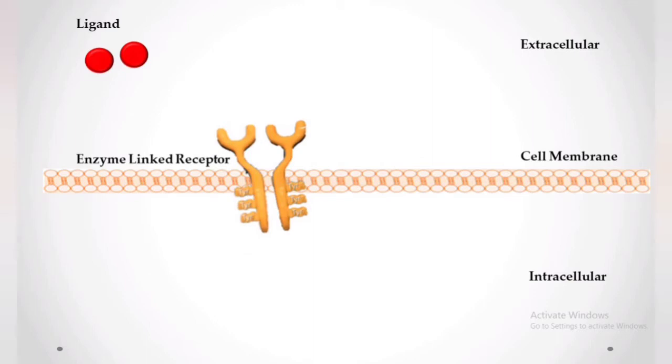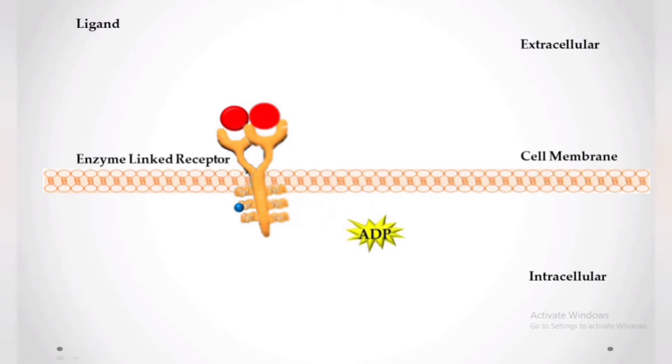In enzyme-linked receptors, the transmembrane protein of the receptor is an enzyme, for example tyrosine kinase receptor. The binding of the ligand to the tyrosine kinase receptor induces the dimerization of the receptor and activates the tyrosine kinase activity through autophosphorylation of ATP to ADP and phosphorylates other intracellular enzymes sequentially, resulting in activation or inactivation and various cellular responses.